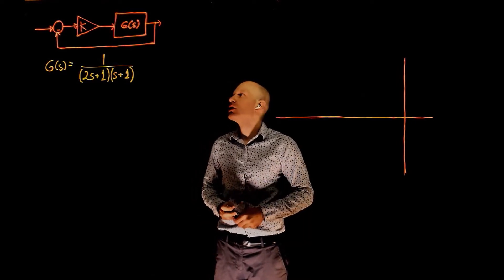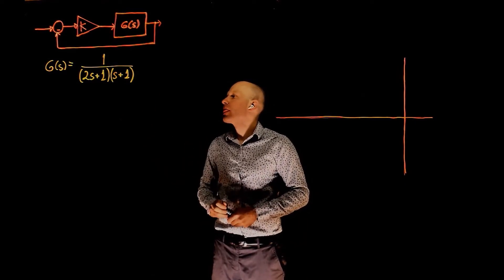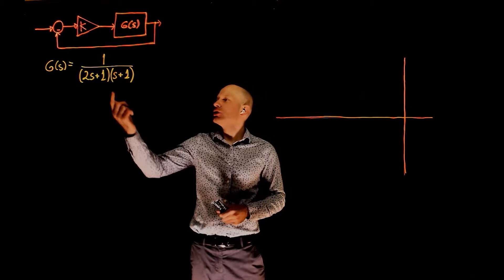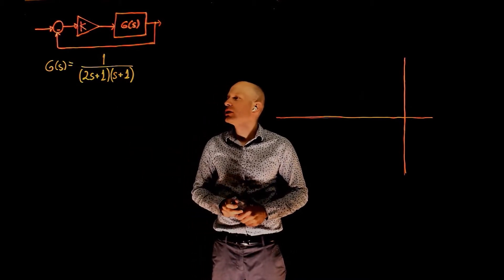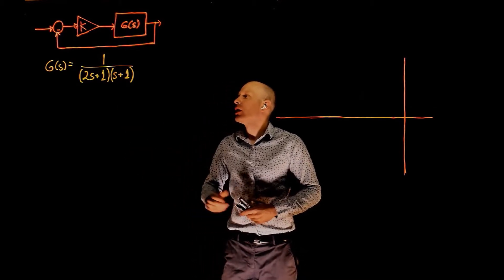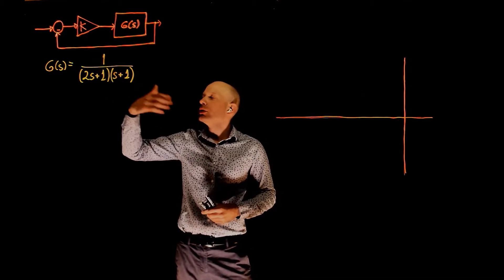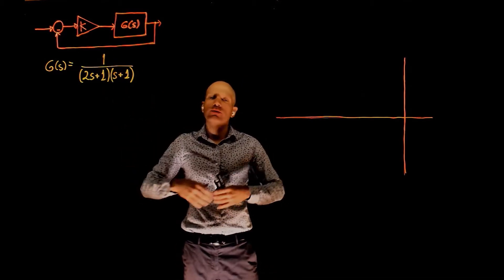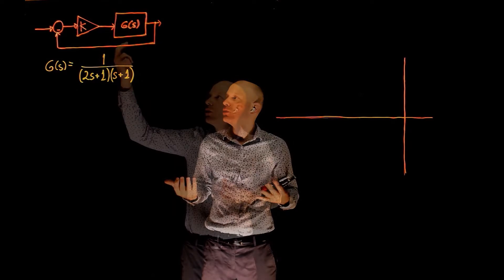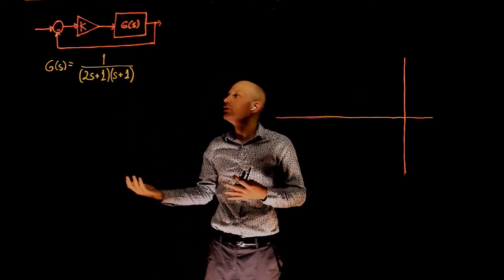Here we have another root locus for this unit feedback system. The plant transfer function is 1 over (2s plus 1) times (s plus 1). We have a gain k and we're looking for the root locus or the representation of location of all poles when this k goes from 0 to infinity.